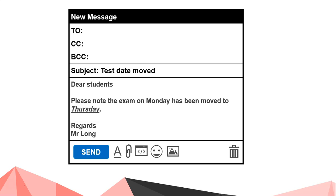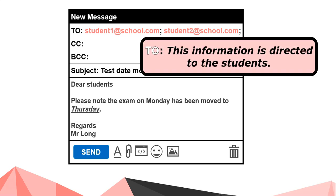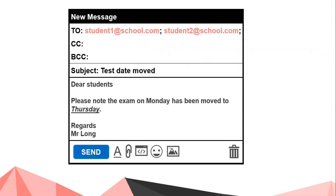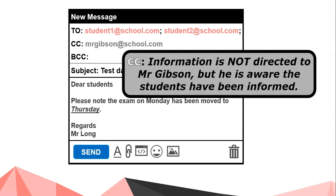Let's take an example: an email needs to be sent to students to tell them that the test has been moved from Monday to Thursday. In the To section, I'll include all the students because this information is directed to them — they need to know the test has been moved. I'll include Mr. Gibson, the other teacher, in the CC section, since we've already discussed this but he needs to be aware.